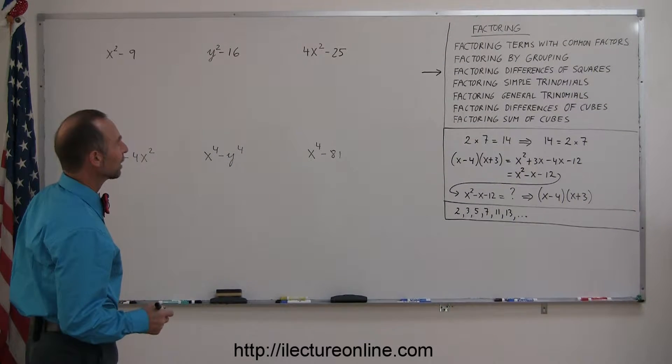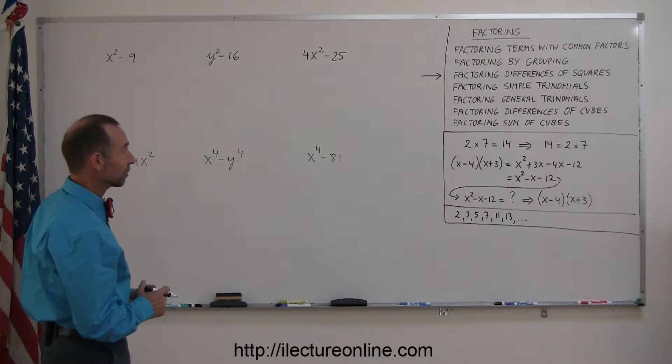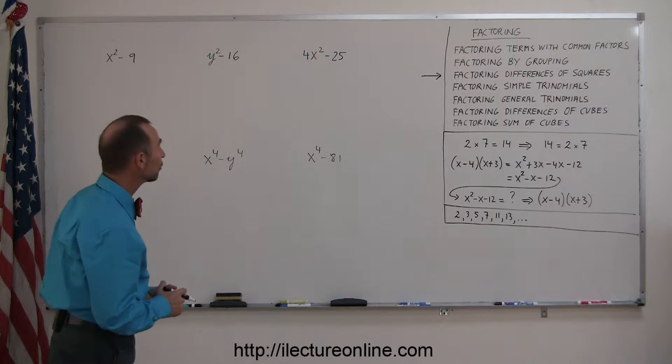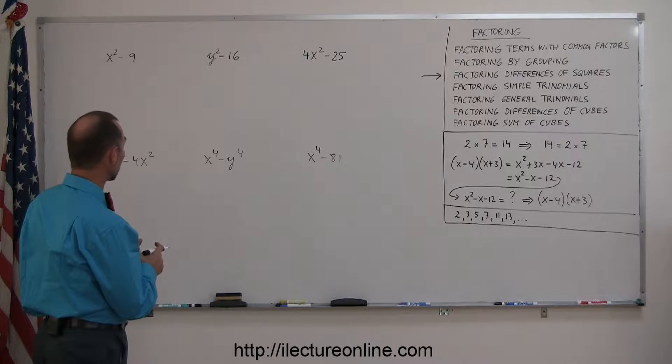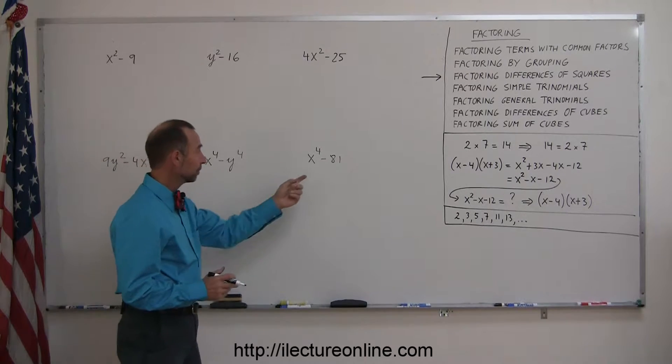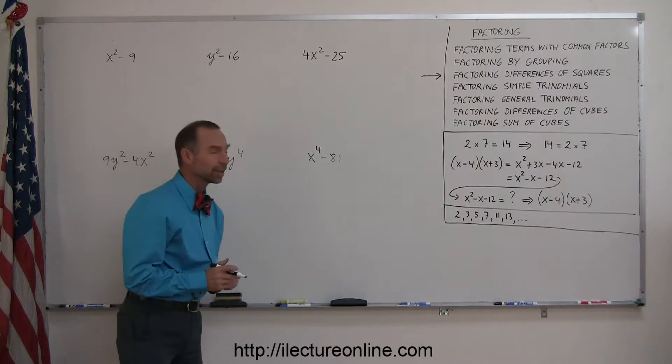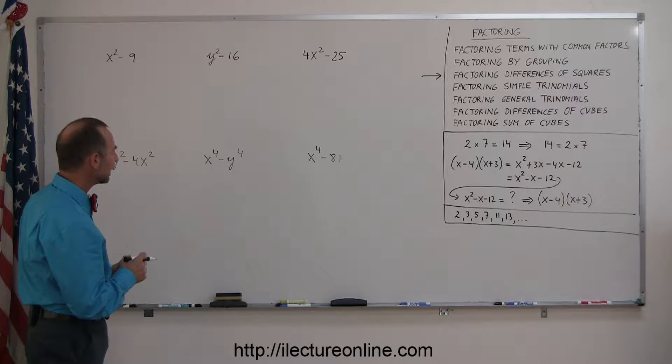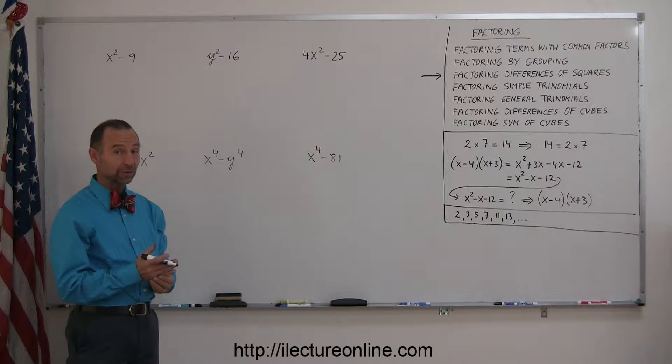Okay, the third type of factoring that you will run into is called factoring the difference of squares. In this case, you end up with an algebraic expression that just has two terms. In each case, one term is subtracted from the other, and on top of that, each of the two terms is a square of something.